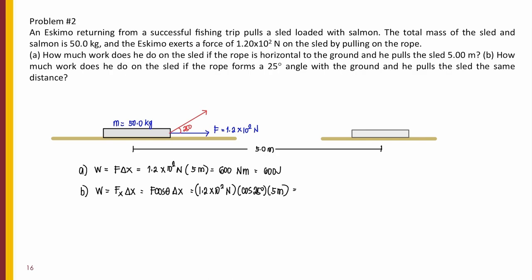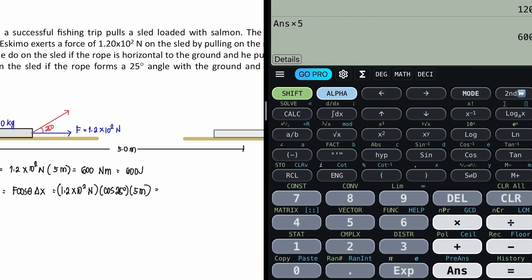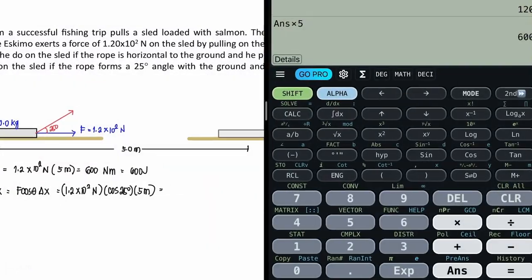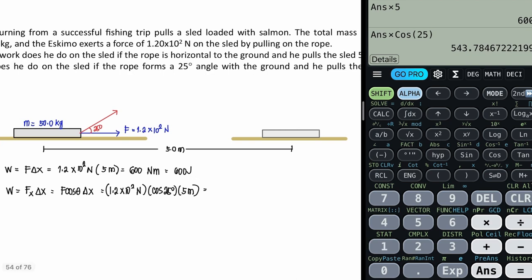So, for letter B, your answer in letter A, you're just going to multiply that with cosine of 25 degrees. So, work done is lesser. That's 543 point, let's round it off to the fourth decimal, 7847. 543.7847 newton meter or 543.7847 joules.